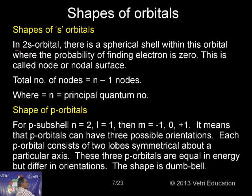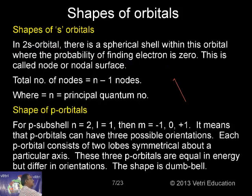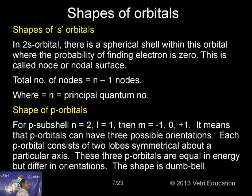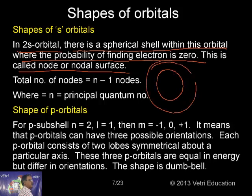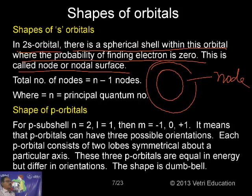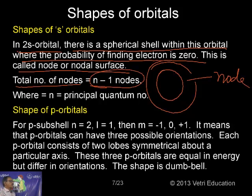The total number of nodes in an s orbital is n − 1. For example, if n = 4, there are 3 nodes. Now let's look at the shape of p orbitals. For the p subshell, n = 2, l = 1, and m has 3 possible values. The p orbital has a dumbbell shape and can have 3 possible orientations. Each p orbital consists of 2 lobes symmetrical about a particular axis.